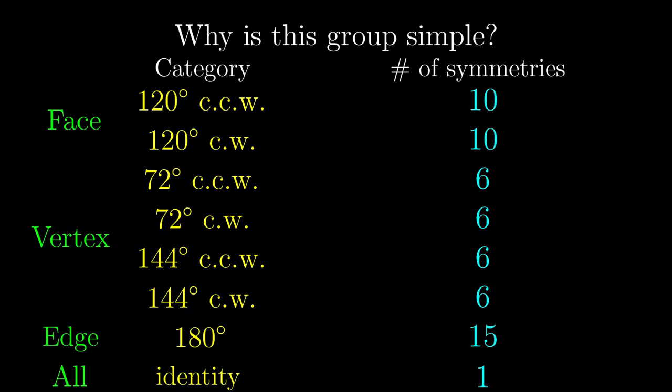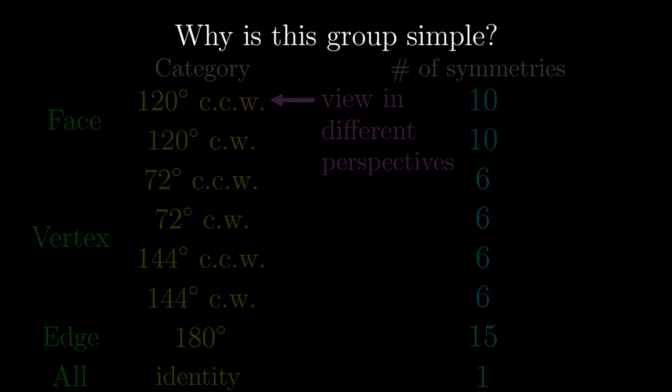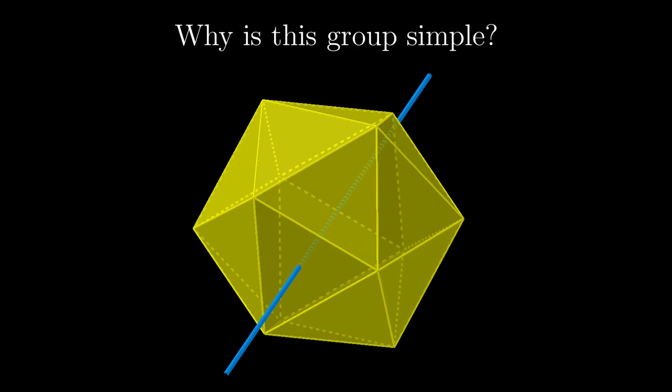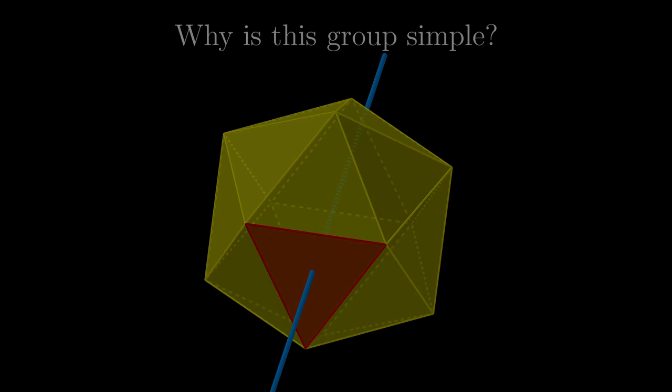Anyway, the question we are after is why this group is simple. Let's pick any symmetry in this category as a seed in the box analogy as seen before. By normality, the same symmetry in different perspectives need to be included in the box as well. It's not difficult to see that by rotating our perspectives, we can rotate this axis to any other axis as long as they both pass through the centre of a face.